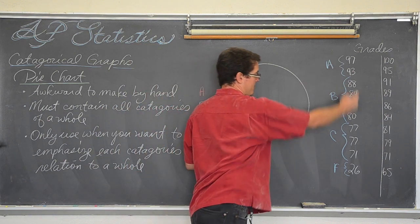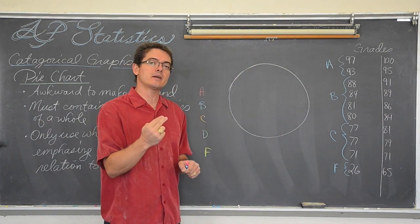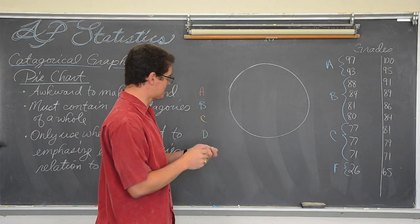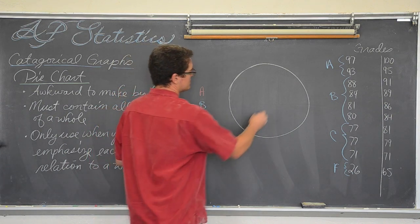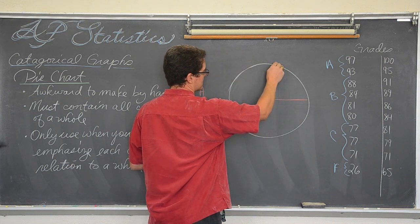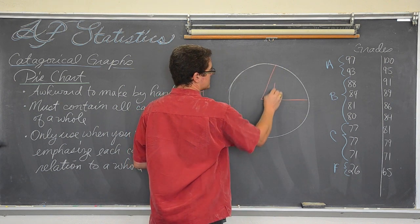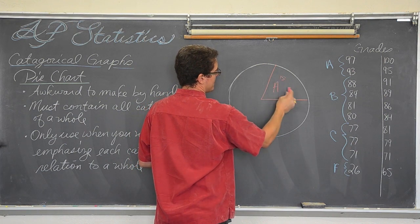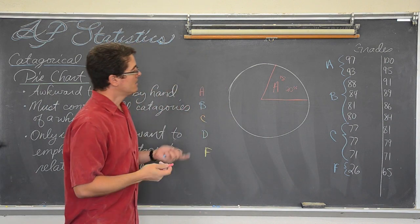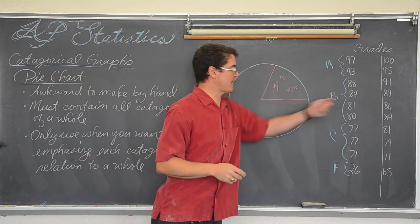This is ten people total, and if two people have an A out of ten, two divided by ten is twenty percent. I am going to try and guesstimate as close as I can, this is the awkward part, what twenty percent of a circle looks like. Well, it is not quite twenty-five, so let's say it is right here. This is my A's, and you would not write this in a pie chart, but that is twenty percent of the data.